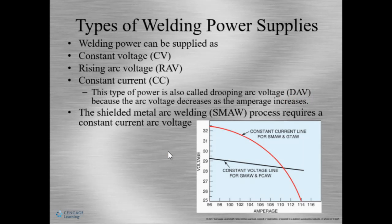Now we're going to talk about types of welding power supplies. This is really important to know and understand because certain types of welding must have a particular type of welding power supply. The first type is constant voltage or CV. The machine is set to a particular voltage and amperage. When the arc is struck and maintained, the welding machine tries to keep the voltage the same by varying the amperage. Constant voltage welding supplies are used by wire feed machines and allow for the wire to be burned and consumed.